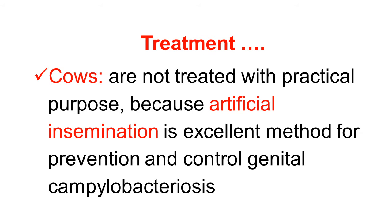Continuing the treatment aspect: bulls are treated, but cows are not treated, for some practical purposes. Nowadays, artificial insemination is used almost universally, and artificial insemination is an excellent method for prevention and control of this genital campylobacteriosis. So cows do not require any treatment or preventive measures for practical purposes.